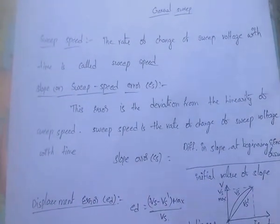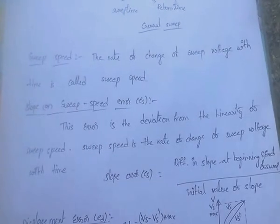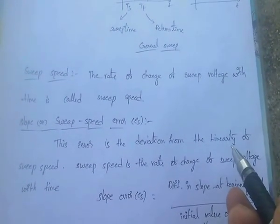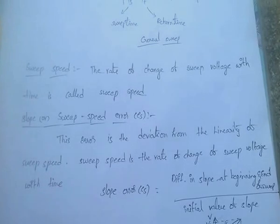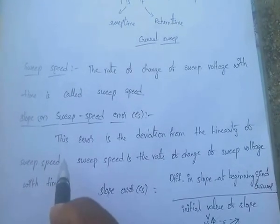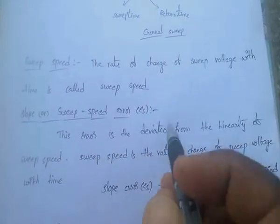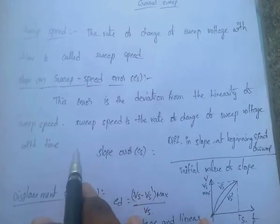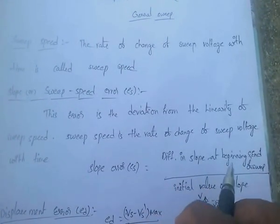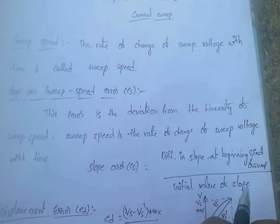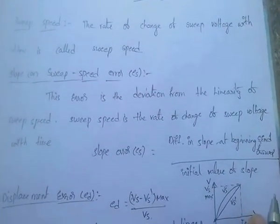The slope error or sweep speed error is the deviation from the linearity of sweep speed. The sweep speed error is equal to the difference in the slope at the beginning and end of the sweep divided by the initial value of the slope.